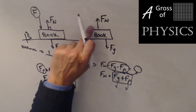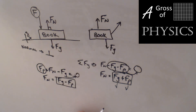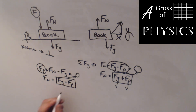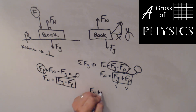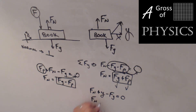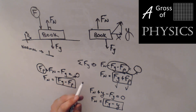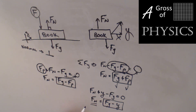We could even have a more complex situation where someone is pulling the book with a rope at an angle. First we resolve that force into x and y components. Then the equation becomes: F_N plus the y component upward minus F_G equals zero, so the normal force equals F_G minus the y component. If we're pulling the book up at an angle, it's making it easier for the ground — the normal force is less than gravity. The normal force can be bigger, smaller, or equal to gravity; you must face each problem as it comes and adapt.